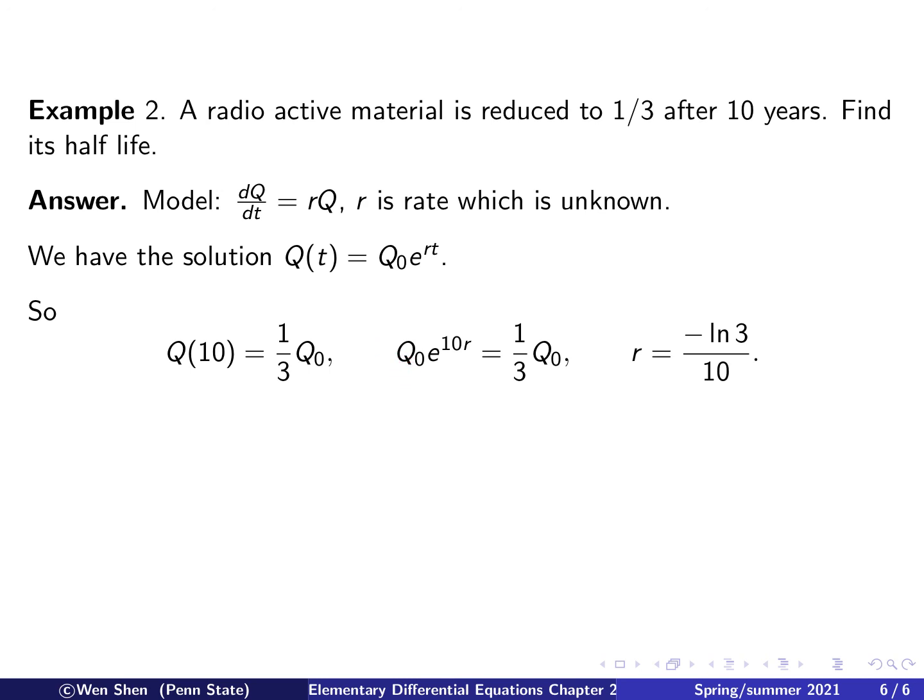Okay, and then we see that Q0 is common factor, let's drop it, then I have e to the 10r is one-third, and if I take natural log on both sides, I would get 10 times r is ln of one-third is negative ln of three, and then I can move the 10 to the right-hand side and find that r is negative ln of three over 10. So, at least it's confirming our expectation of having a negative number.